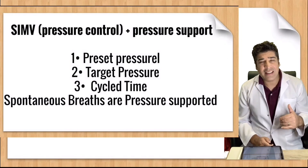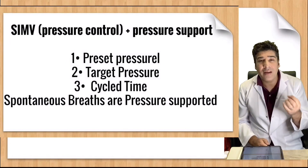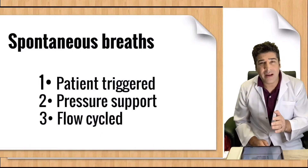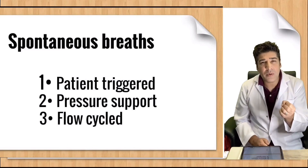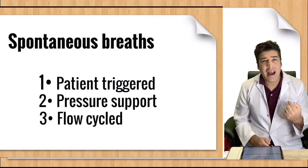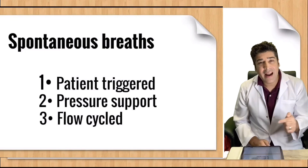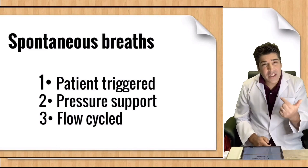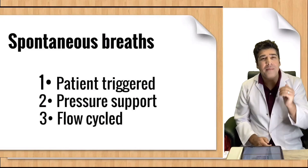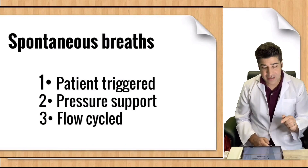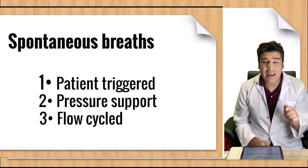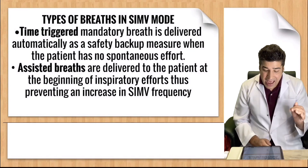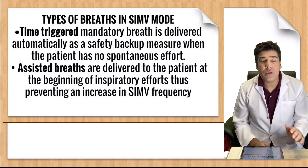What are the characteristics of spontaneous breaths when they are pressure supported? As discussed earlier regarding pressure support ventilation, it is patient triggered, flow cycled, and pressure targeted. These are the characteristics of spontaneous breaths on SIMV when they are pressure supported. Regarding types of breaths: time triggered mandatory breaths are delivered automatically as a safety backup when the patient has no spontaneous effort. Assist breaths are delivered to the patient at the beginning of inspiratory efforts, thus preventing an increase in SIMV frequency.